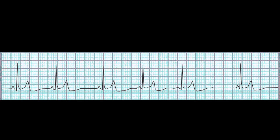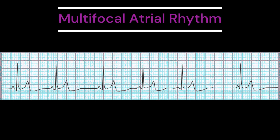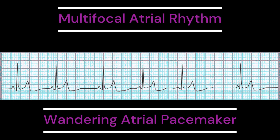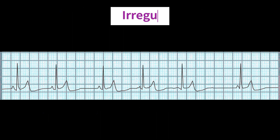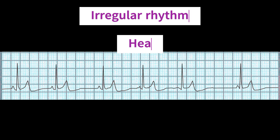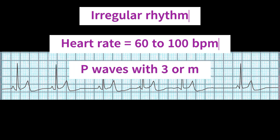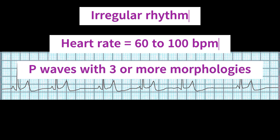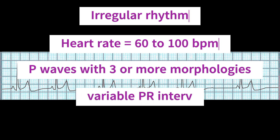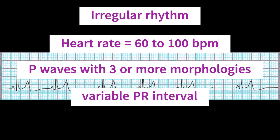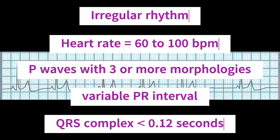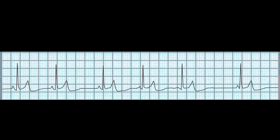And to summarize: multifocal atrial rhythm, also known as wandering atrial pacemaker, would have the following analysis characteristics — a rhythm that is irregular; heart rate between 60 to 100 beats per minute; P-waves that have at least three different morphologies or forms; PR intervals that vary in length due to the P-waves having varying morphologies; and QRS complexes that would be normal or narrow, and less than 0.12 seconds. We hope this helps.